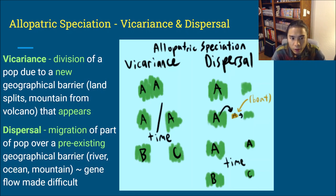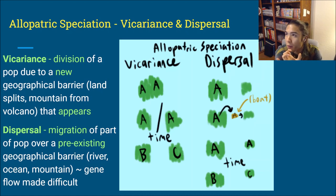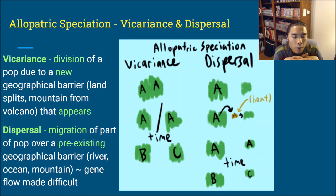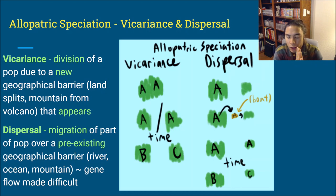Dispersal is where you have migration — parts of a population moving to a new area. They cross a pre-existing geographical barrier like a river, an ocean, or a mountain, and gene flow is made difficult.